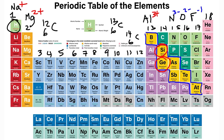H is hydrogen — the fuel that powers the stars of the universe. The sun converts hydrogen into helium in a process known as nuclear fusion. He is helium — if you put helium in a balloon, because helium is less dense than air, those balloons will float high into the sky unless you hold them.